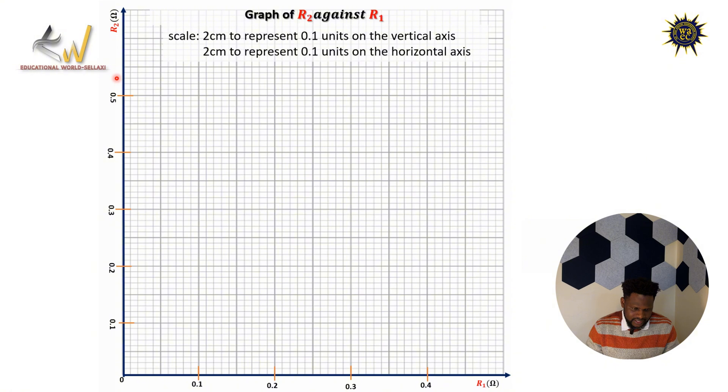So here is the vertical axis. This is the axis of R2. You can see that from 0 to this point is 1cm. From here to here is 2cm. That is how I got my scale, 2cm to represent 0.1 units on the vertical axis. This is anything that happens here. From here to here is 1cm. And from this point now, move to this point is another 1cm. So 1 plus 1 is 2cm. So on the horizontal axis, 2cm to represent 0.1 units.